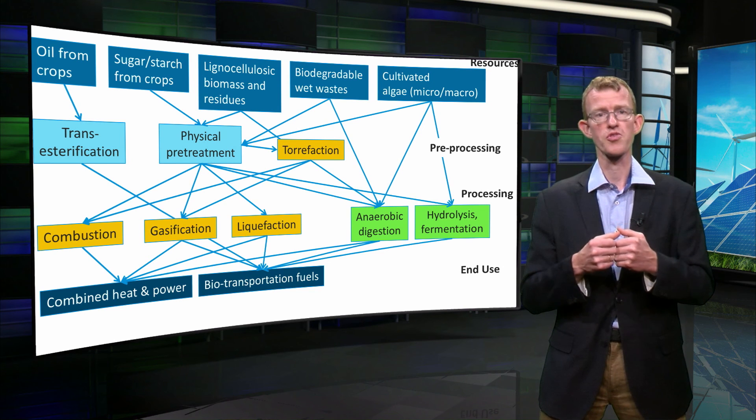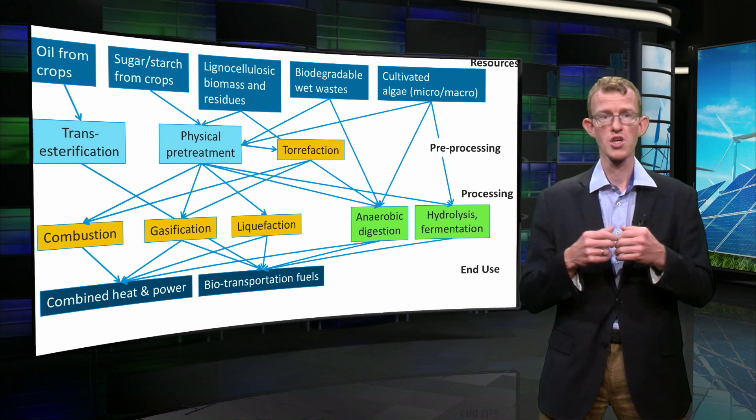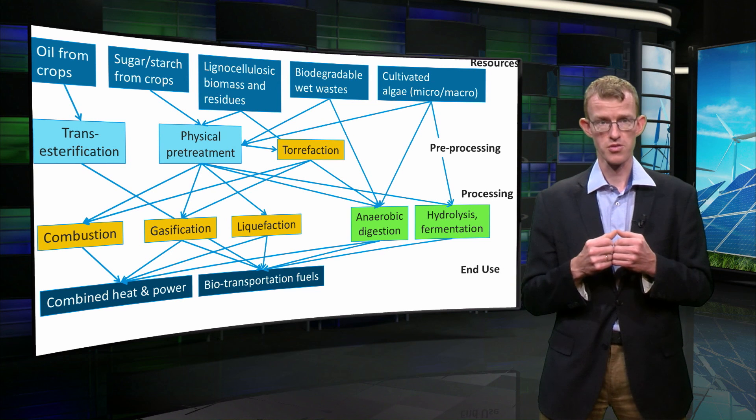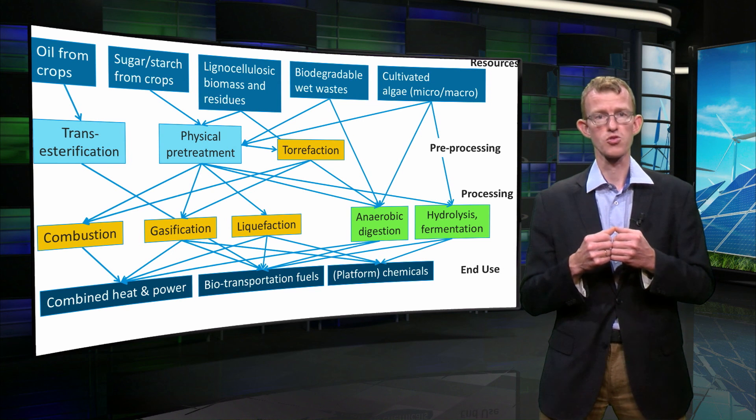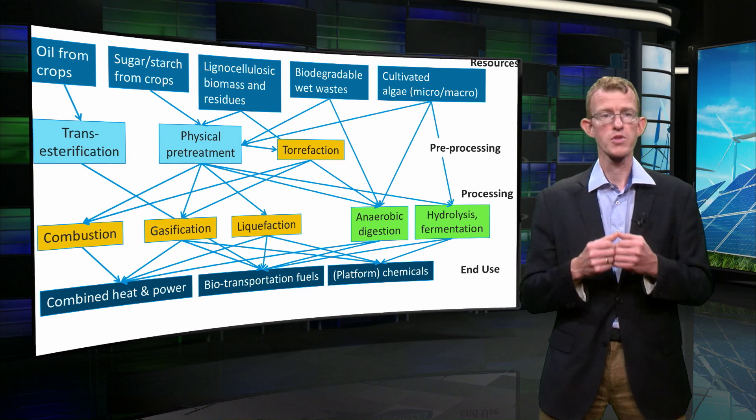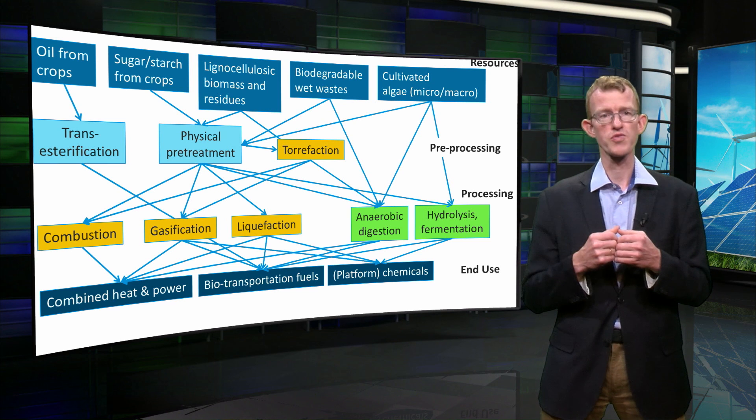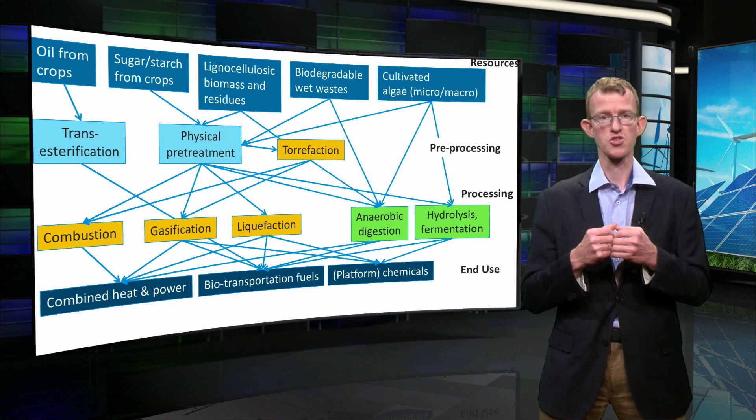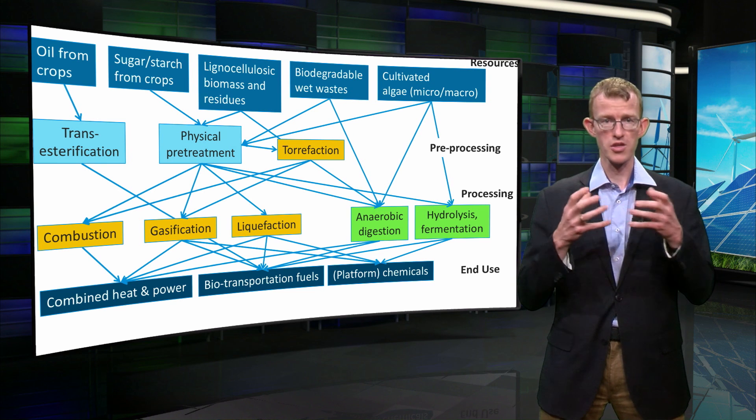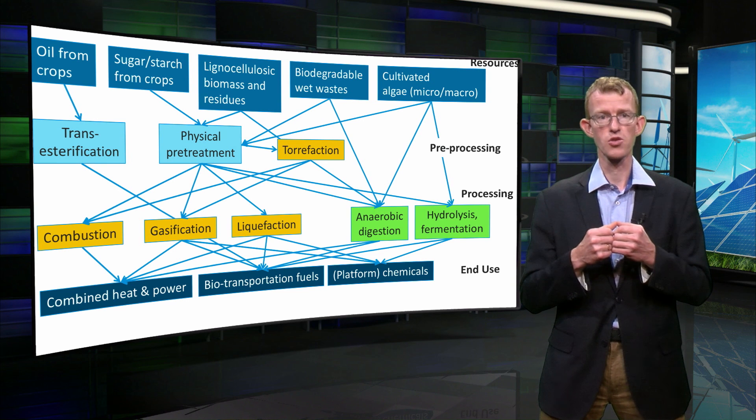Biomass is also an important source for making sustainable fuels for vehicles. We will come back to that later. And finally, biomass can also be used to make chemicals. We talk about so-called platform chemicals when such a compound can be used as a starting point to make other chemicals again. This is typically done in the bio-refinery.